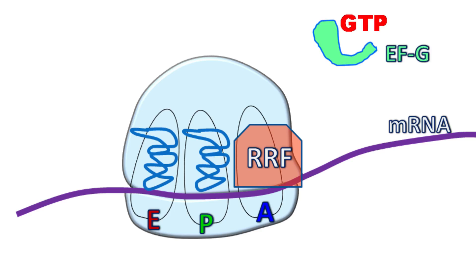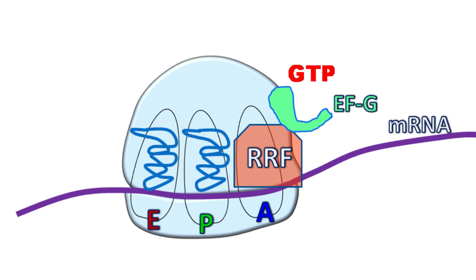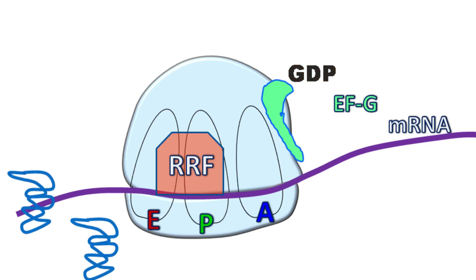In presence of elongation factor EFG, the RRF releases the two uncharged tRNA from E site and the P site.